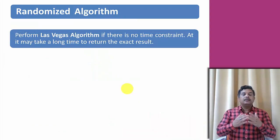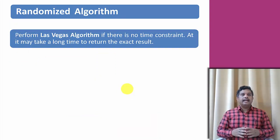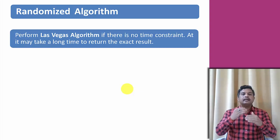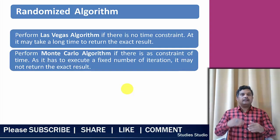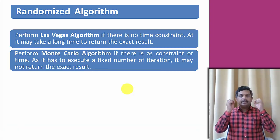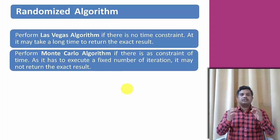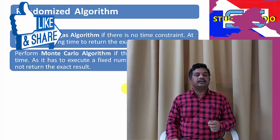We can use a Las Vegas algorithm when there is no time constraint — it runs as long as needed and always returns the correct or exact result. We use a Monte Carlo algorithm when there is a time constraint, as it executes a fixed number of iterations and may not return the exact result.